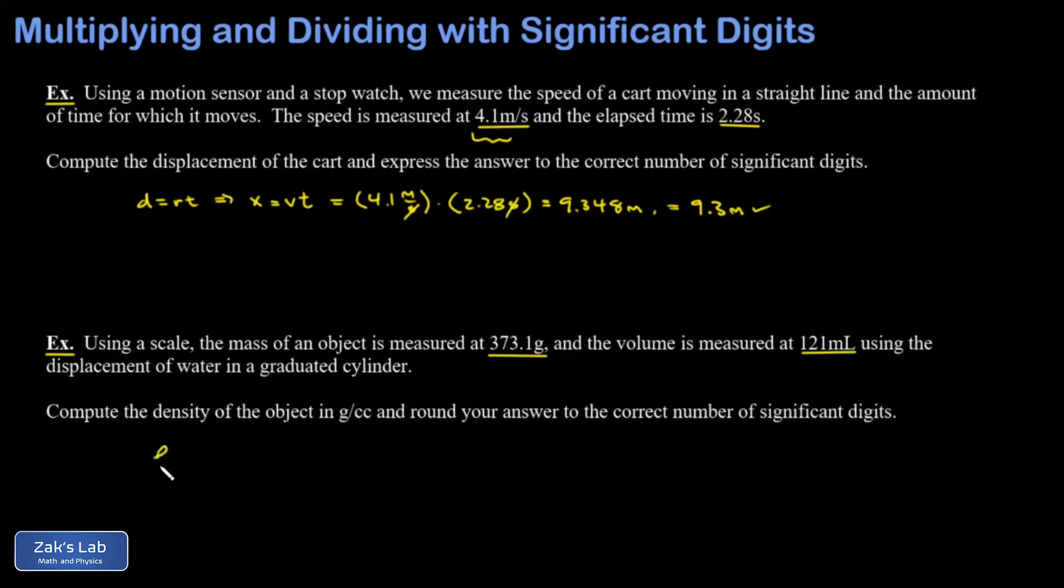There's a couple things we need to know here: we need to know that density is mass divided by volume, and we also need to remember that a milliliter is exactly the same thing as a cubic centimeter. So 121 cc's. We plug in our mass of 373.1 grams, we plug in our volume 121 cc's, and we run the numbers.